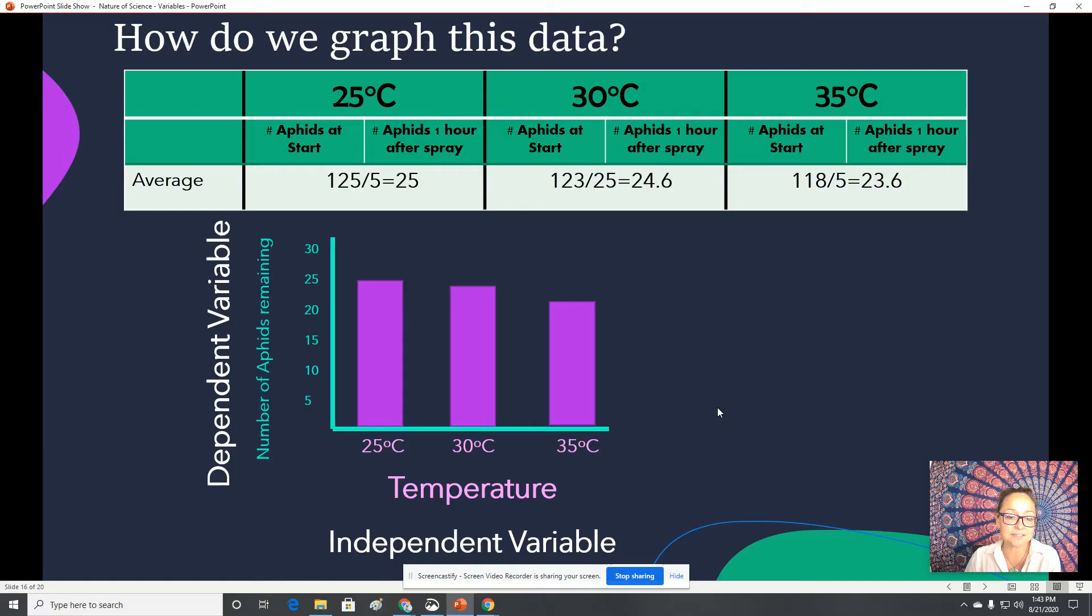Now when I graph these, I'm using a bar graph because I'm representing an average for a group over time. Now if I look at this, some people might say 25 degrees was the highest bar and therefore the best temperature at getting rid of aphids. Now in truth, this is where statistical analysis comes into play in analyzing graphs. Here you would calculate standard error and you would see if there is actually a significant difference between these three groups.